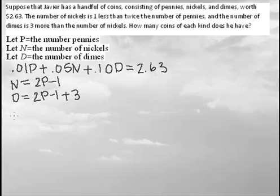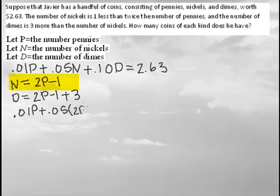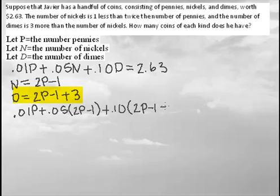Now we're going to substitute these values into our equation. So we have 0.01p + 0.05(2p − 1) + 0.10(2p − 1 + 3) = 2.63.